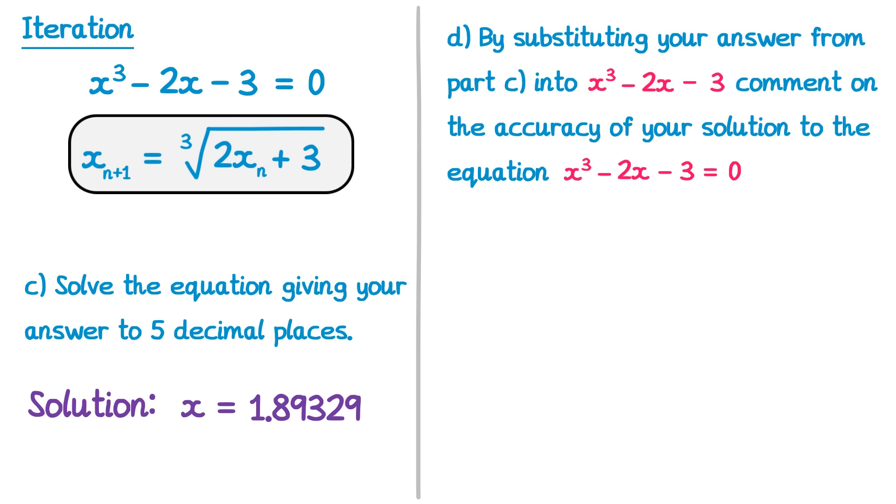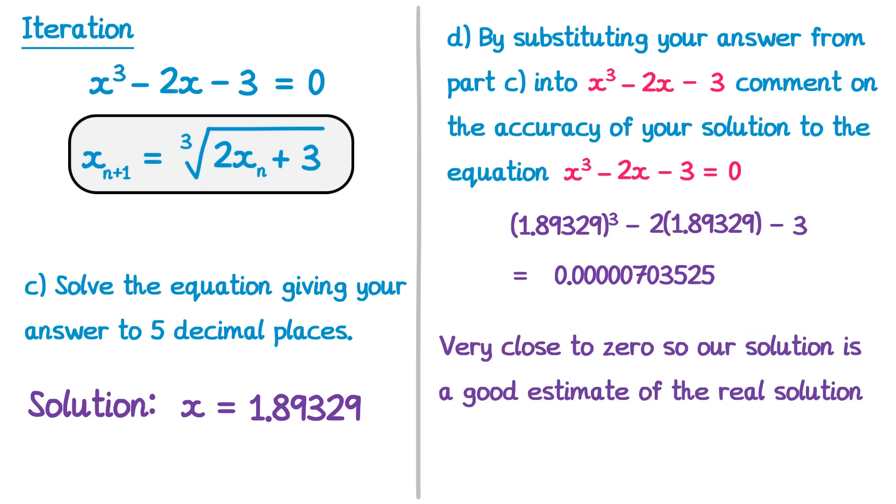All we need to do here is write out the equation again, but instead of x, we're going to write our solution 1.89329. 1.89329 cubed minus 2 lots of 1.89329 minus 3. Now if you type this into a calculator, you'll get 0.0000703525. So a very, very small number. So we could say that this is very close to zero, so our solution is a good estimate for the real solution.